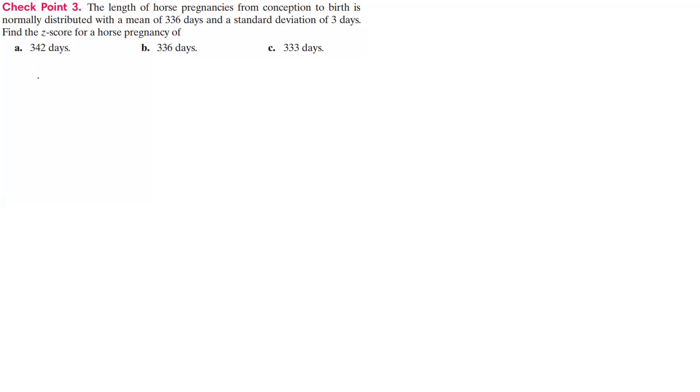For part A, our z-score is going to be our data item, 342, minus our mean, which we said was 336, divided by the standard deviation, which is 3.